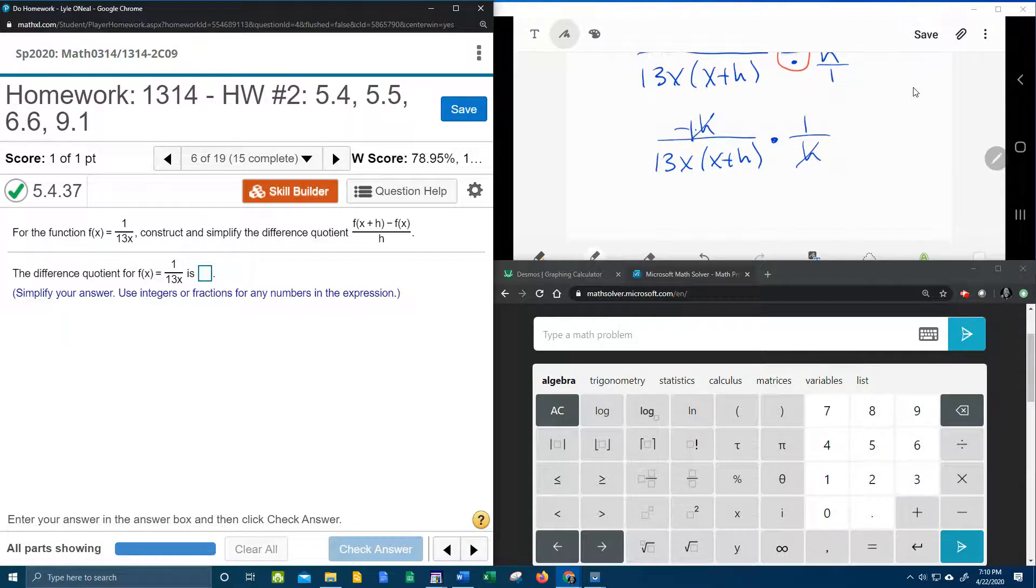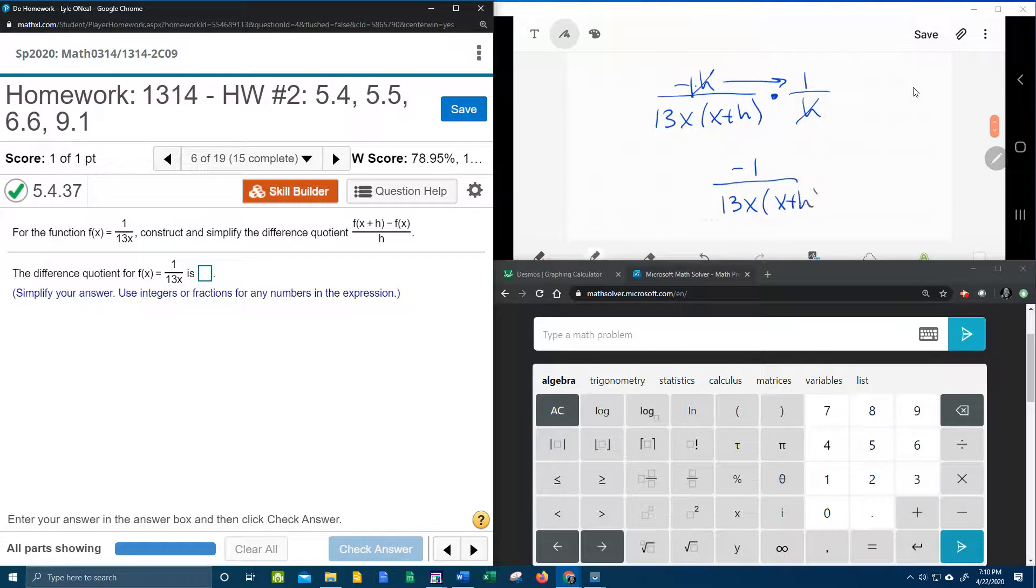And then notice that I have an h top and bottom, so those h's will cancel. The coefficient of this h was understood to be negative 1. So if I multiply straight across, we get negative 1 over 13x times x plus h. And that should be the final answer.